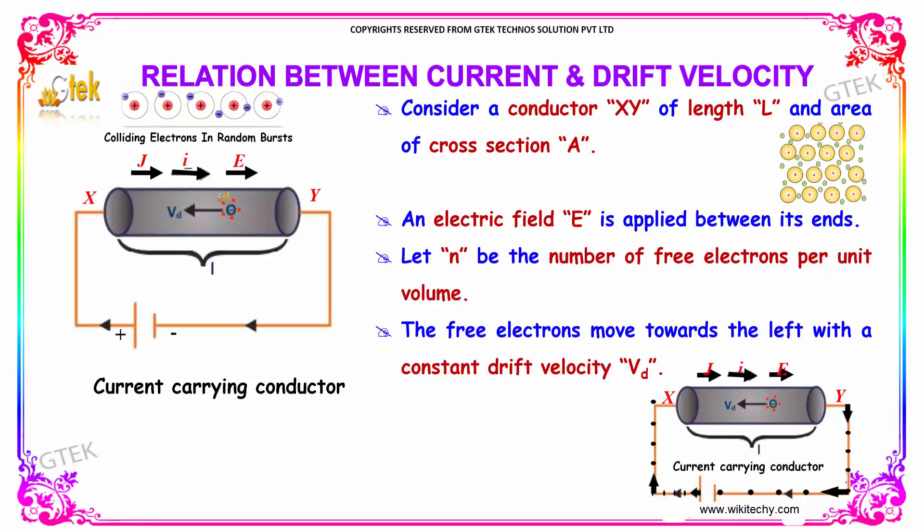An electric field E is applied between its ends. Let n be the number of free electrons per unit volume, the free electrons move towards the left with a constant drift velocity Vd.